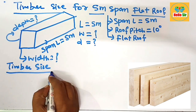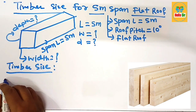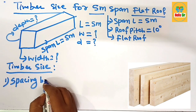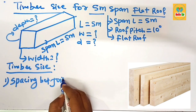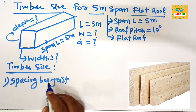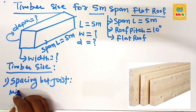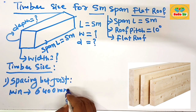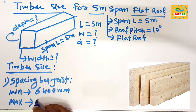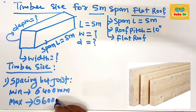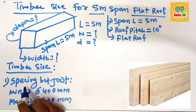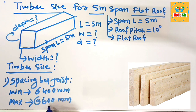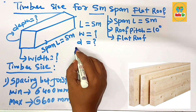The joist size depends on many factors. The first major factor is the spacing between the joists. The minimum spacing is about 400 mm and the maximum spacing is about 600 mm.